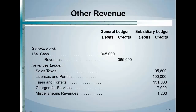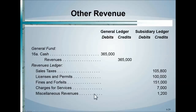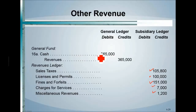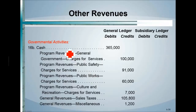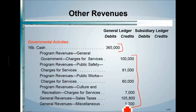Other revenues come in through various forms: sales tax revenue, licenses and permits, fines and forfeitures, and charges for service. Cash is debited and revenues are credited on both the general fund side — with subsidiary ledgers — and the government-wide side, where different revenue accounts in the general ledger are credited.